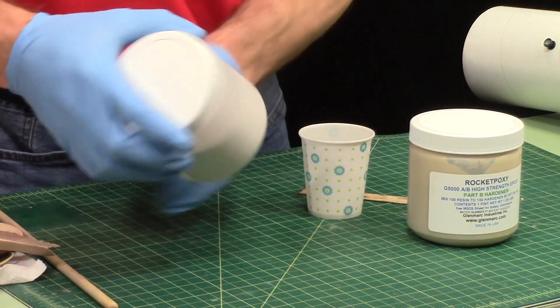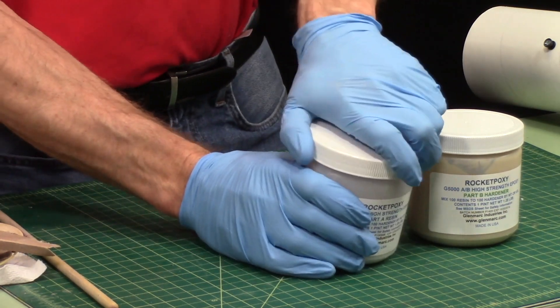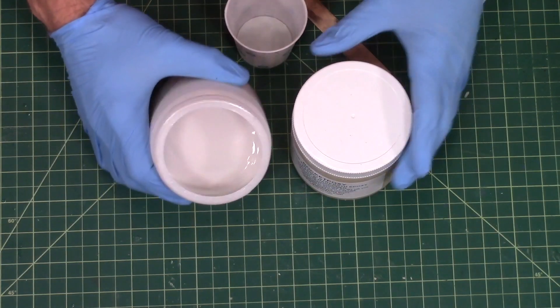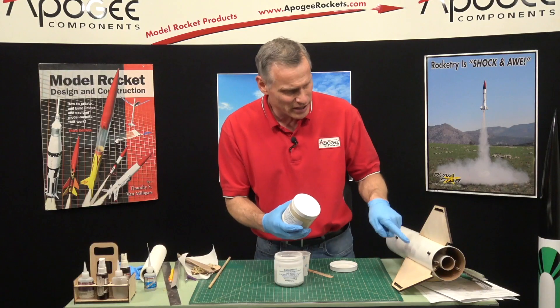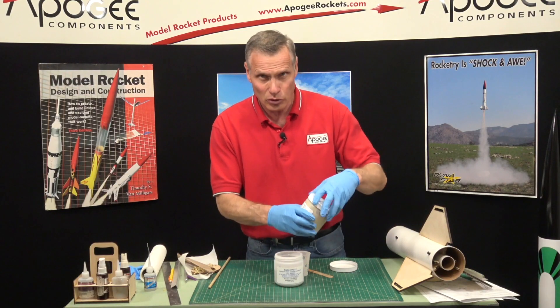And some good epoxy. I like to use the rocket epoxy. It's a two-part paste type epoxy and the reason I like it is it's very thick and so it's not going to run around on the inside and maybe leak out the little corners.